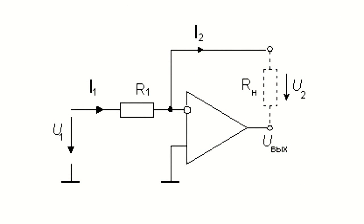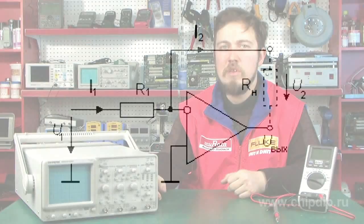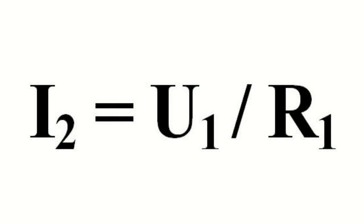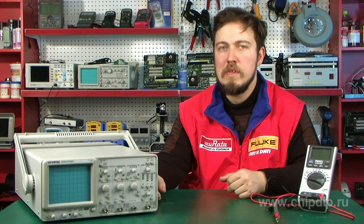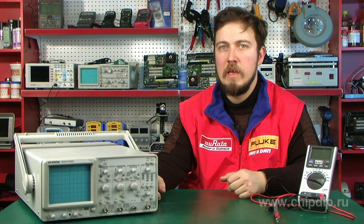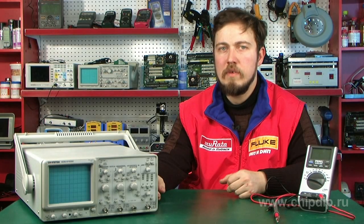In the amplifier, through the negative feedback resistor flows the current I2, which is equal to the ratio of the input voltage U1 to R1. Thus, this current does not depend on the voltage drop across the resistor R2. The disadvantages of such amplifiers are the absence of load grounding — the so-called floating load — and the dependence of the output current on the voltage supply.